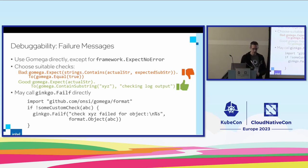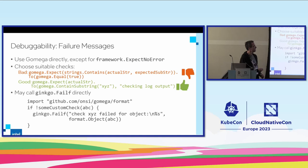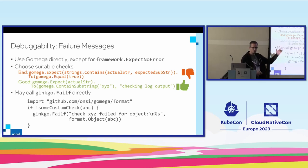Another thing people often get wrong is using Gomega but only knowing about, say, string contains. What they do is pass the result of some check in Go to Gomega's Expect, and the failure message then is 'expected true to be false' — which is not helpful. It's much better to let Gomega see the actual string and use a Gomega assertion like ContainSubstring with the expected substring. Even better is to add additional information about what you're checking, so when it fails it will say: 'I was checking log output, here's what I got, here's what I expected.'